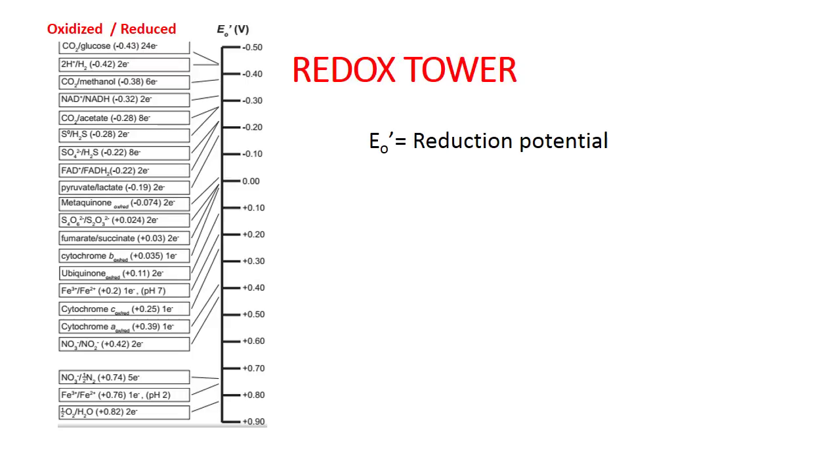Here's the basic structure of a redox tower. We have a list here of half reactions and their E value. This value is the reduction potential, which is the likeliness of a compound to gain electrons. The organization of the tower shows positive E values at the bottom with negative E values at the top.